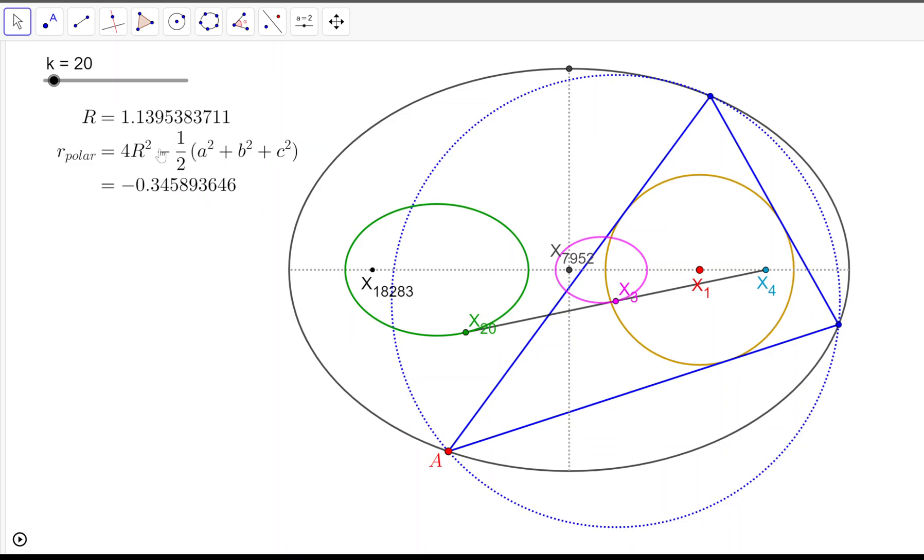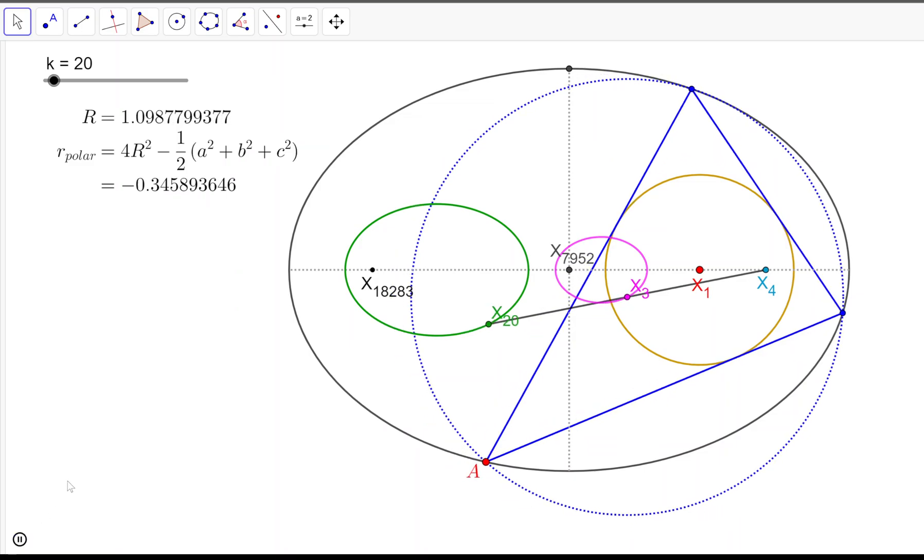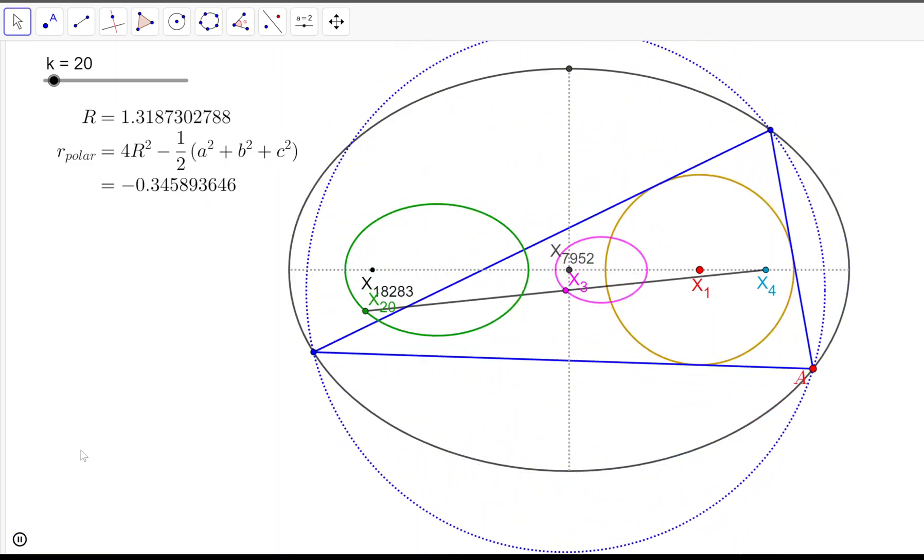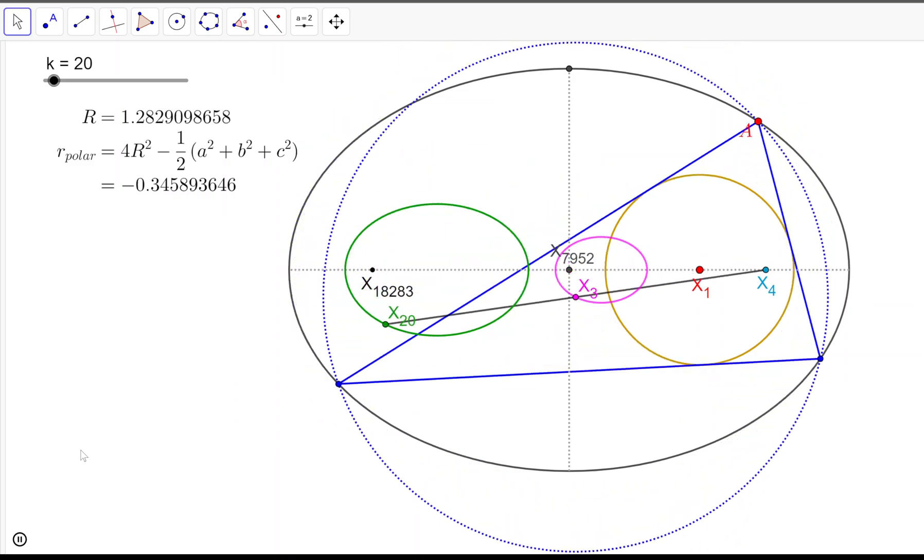Now when you take the orthofocal ellipse and the incircle as a Poncelet conics, you get a Poncelet family of triangles with the following properties: X4 remains stationary.